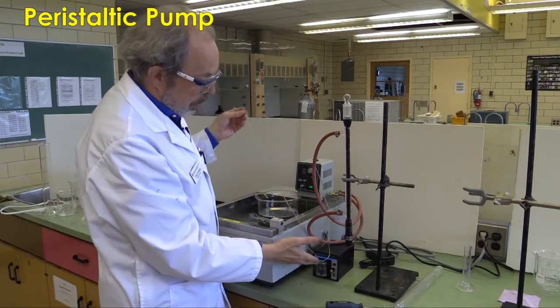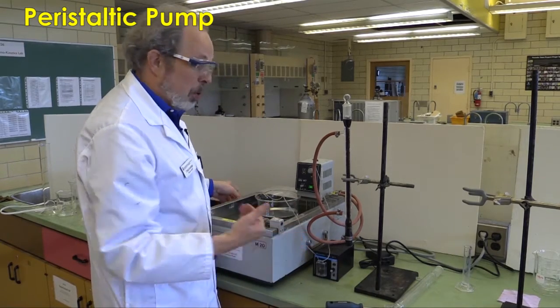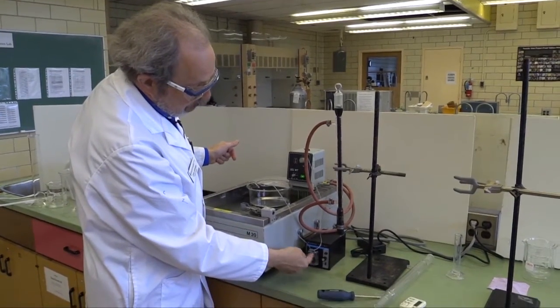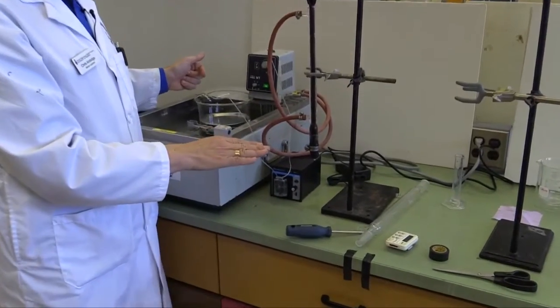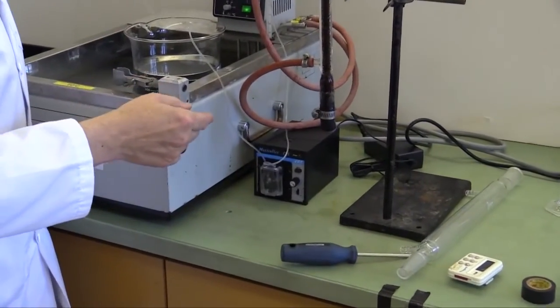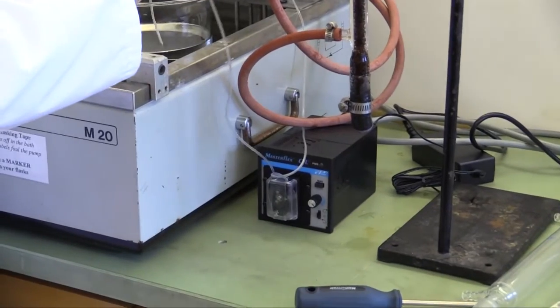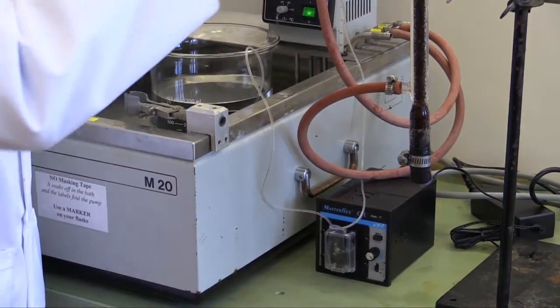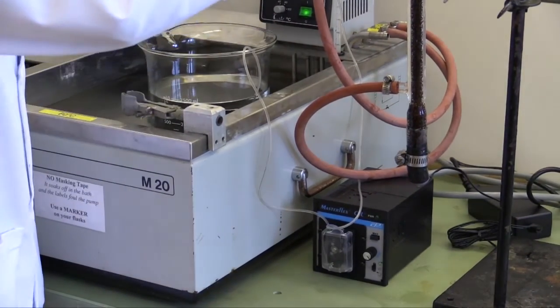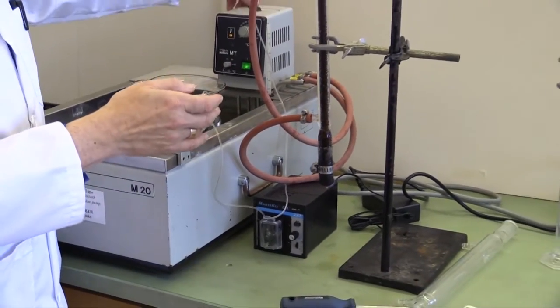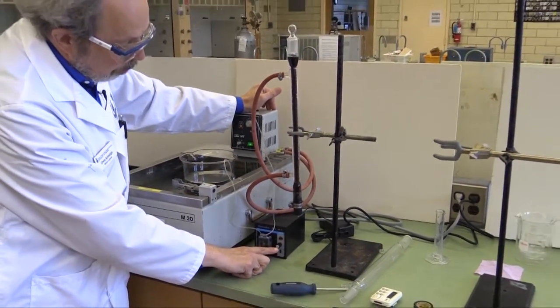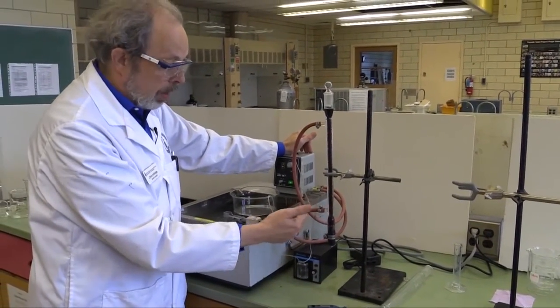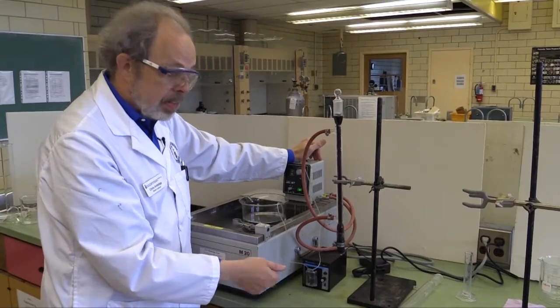This is a peristaltic pump, meaning it works the same way that your guts do, actually. And it's a tube with a roller that pushes the liquid through. There are two ends of the tube, of course, and the free one goes actually into the reaction mixture, like that. And the other one goes to the top, and this is going to go into the top of the reactor.